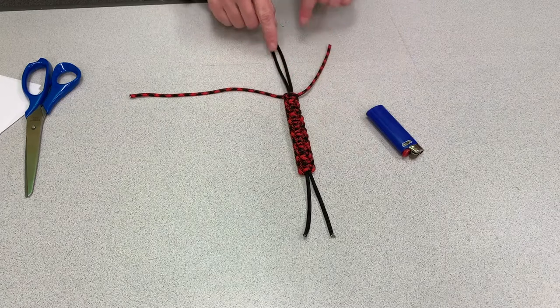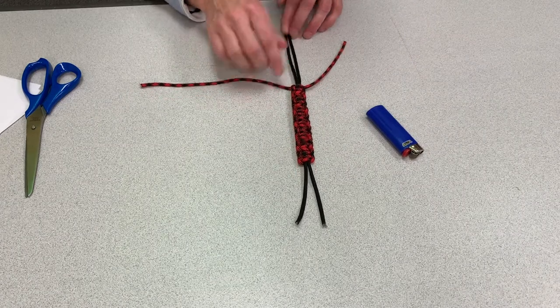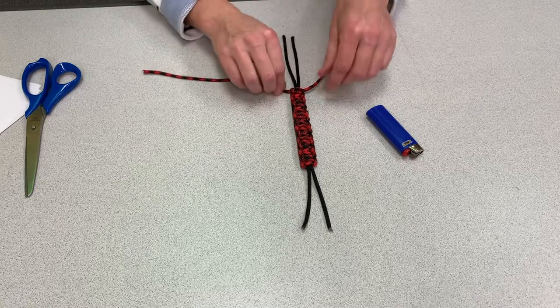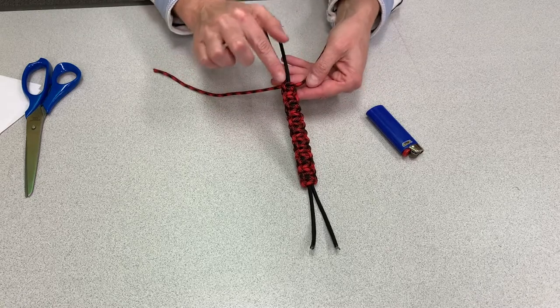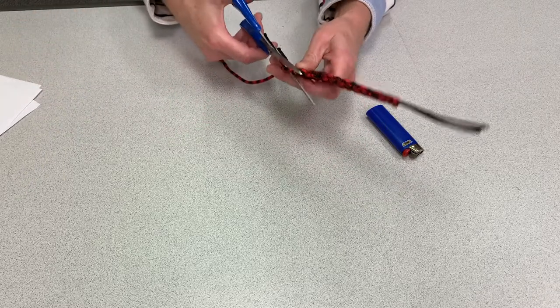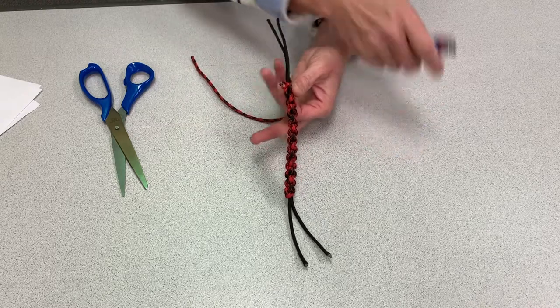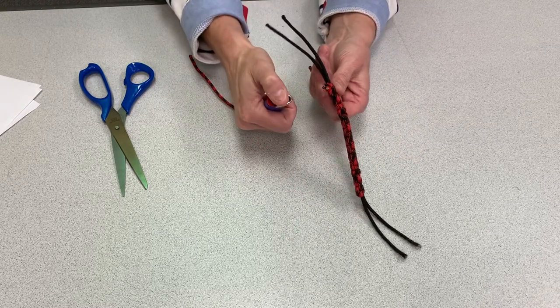So now we've finished our braiding. And I've left a good, maybe four inches at the bottom. What I'm going to do is cut off these excess colored cords. So you just cut it here. And you see that it's fraying a little bit. So that's when the lighter comes in handy.